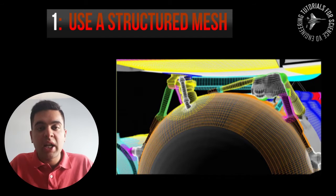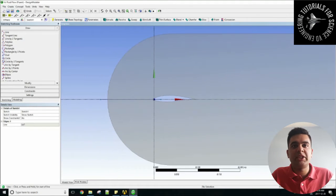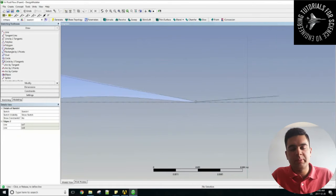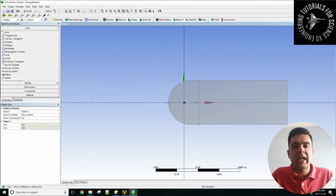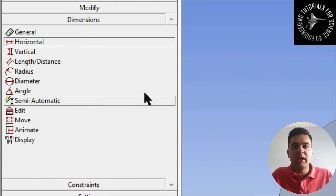I'll show you how to do that in ANSYS Workbench here. Basically the first thing you do is you use the face split feature in your geometry option in any CAD software to split your face up into many regions.